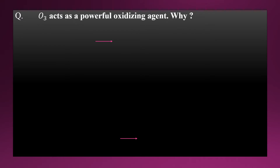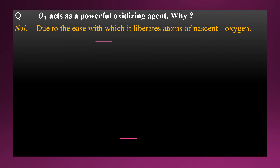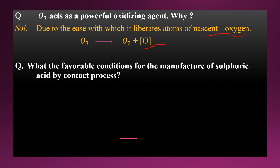The next question is: O3 acts as a powerful oxidizing agent. Why? The answer is due to the ease with which it liberates atoms of nascent oxygen, or atomic oxygen. When O3 decomposes, it produces O2 and nascent oxygen (O). This nascent oxygen is very reactive in nature, and due to this O3 acts as a powerful oxidizing agent. The nascent oxygen readily reacts with other compounds, which get oxidized by the attachment of atomic oxygen.